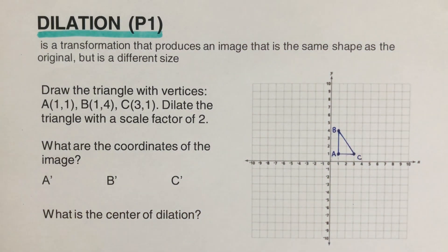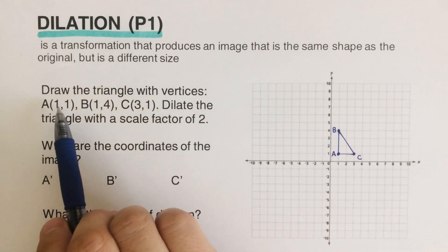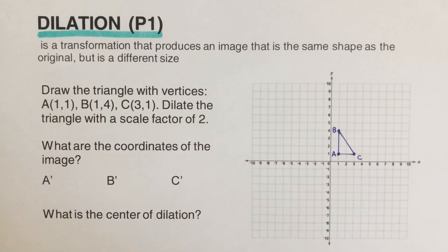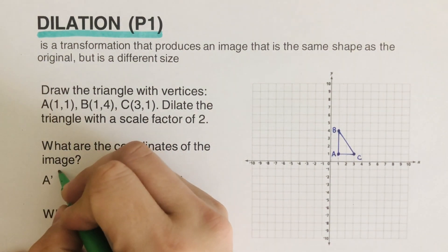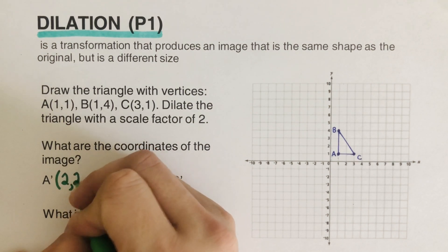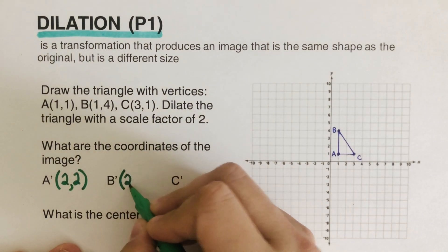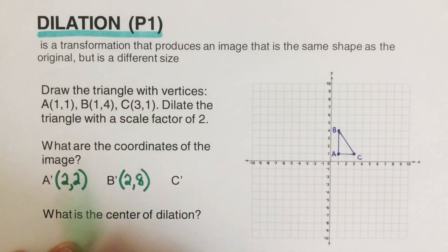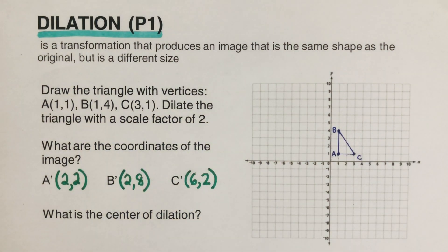The next thing we're going to do — dilation is like blowing it up or shrinking it, either way. We dilate the triangle with a scale factor of two, which means we multiply each of these coordinates by two to get the image. So A prime is (2,2), B prime is (2,8), and C prime is (6,2).